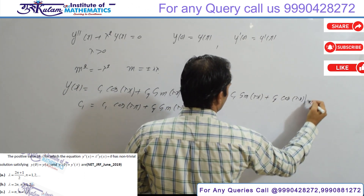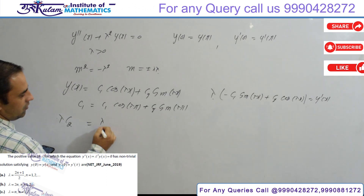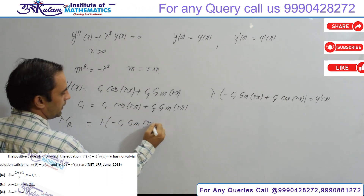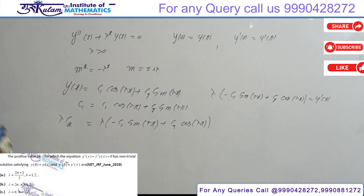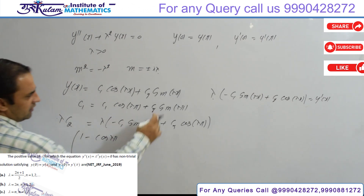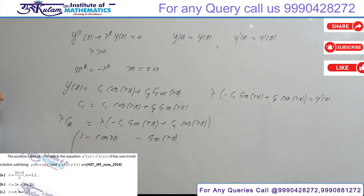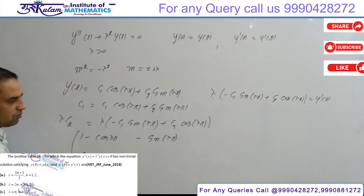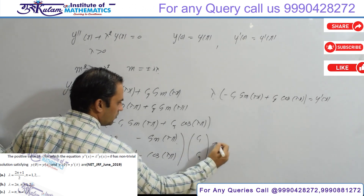The derivative y'(x) evaluated gives us: applying y'(0) = y'(π) yields λ(−c₁sin(λπ) + c₂cos(λπ)). Forming the system of equations, the c₁ coefficient is (1 − cos(λπ)), the c₂ coefficient is −sin(λπ), the c₁ coefficient in the second equation is sin(λπ), and the c₂ coefficient is (1 − cos(λπ)).